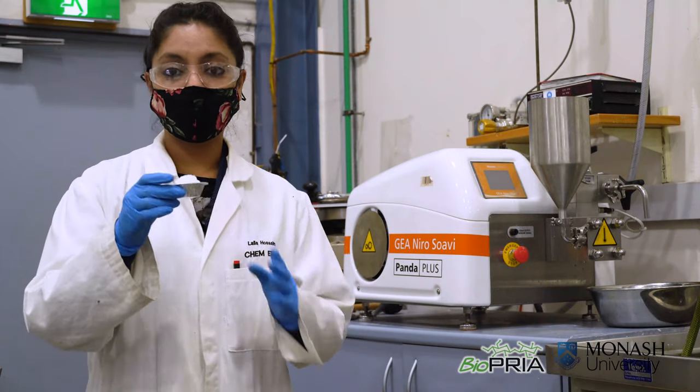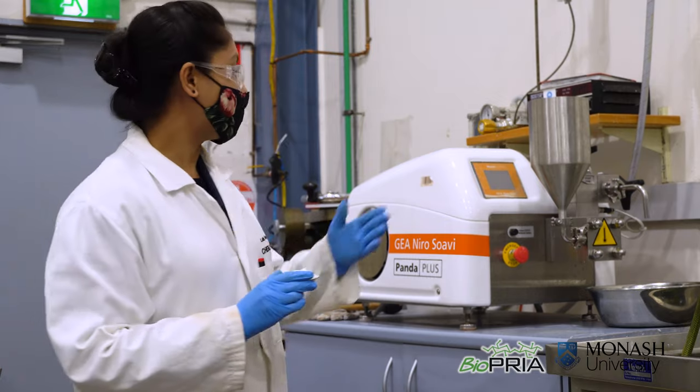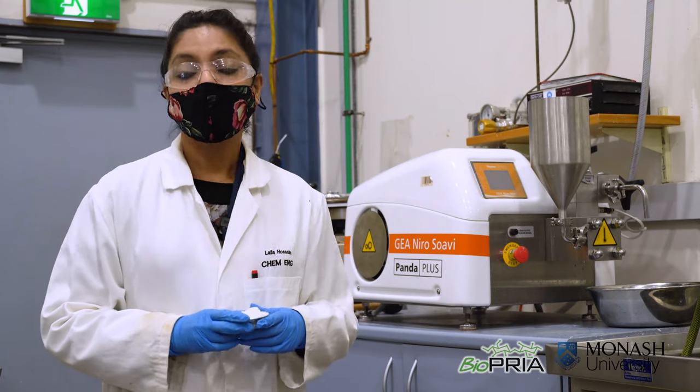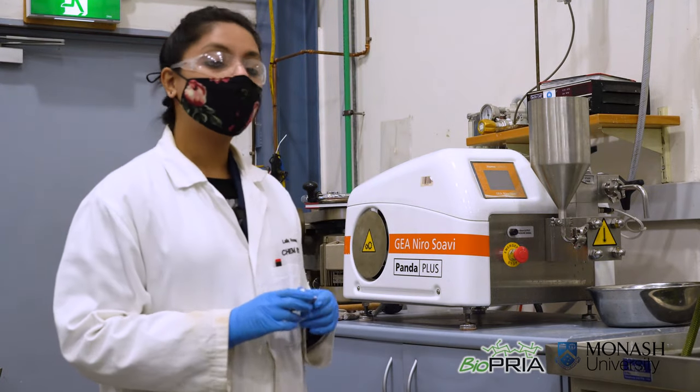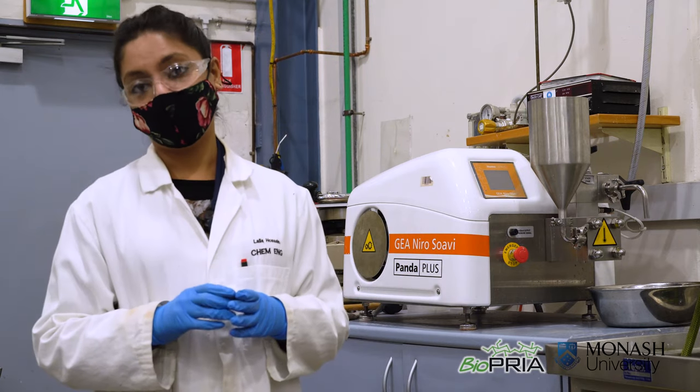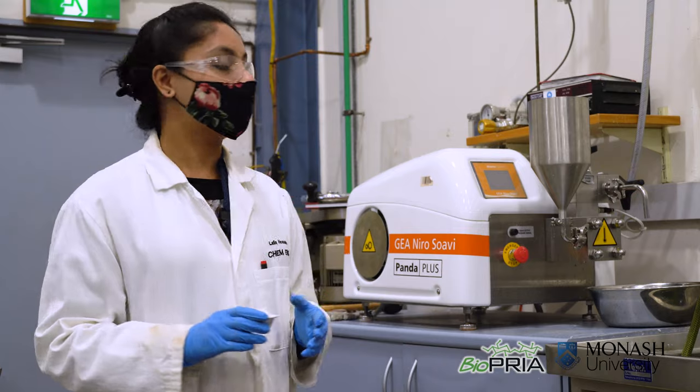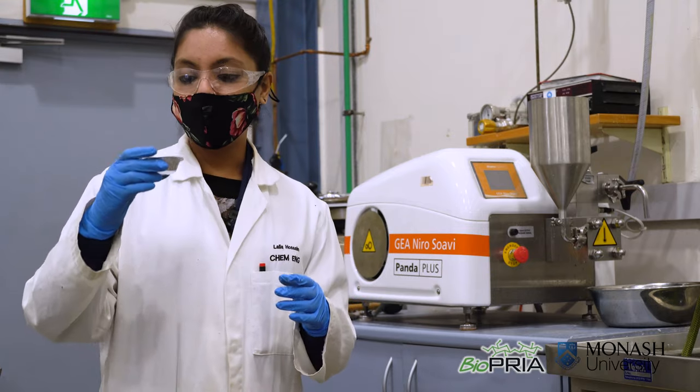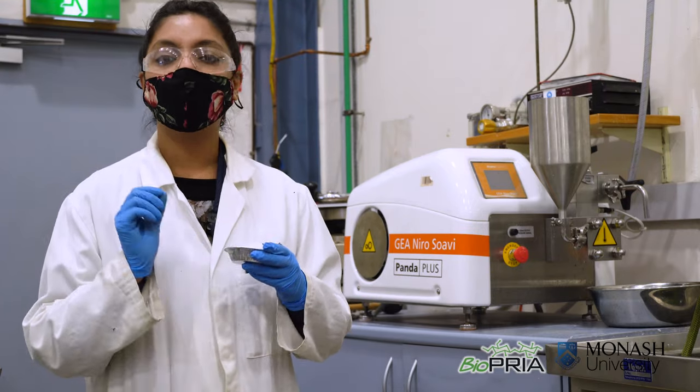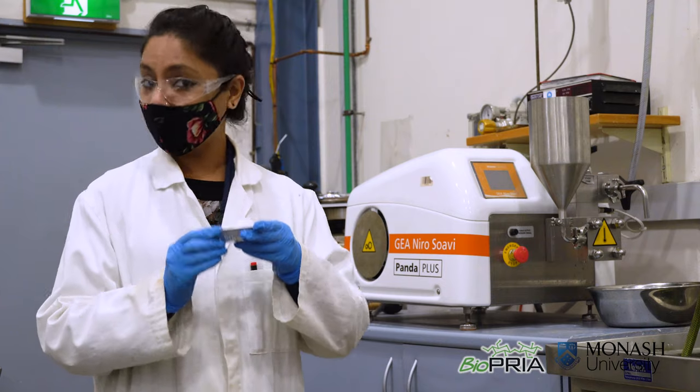Now that we have the oxidized fiber we are ready to do homogenization at 1000 bar. Typically homogenizers are used to prepare emulsion including your favorite ice cream. However in this activity we are going to use homogenizer to fibrillate this cellulose pulp into nano size smaller cellulose fibers.